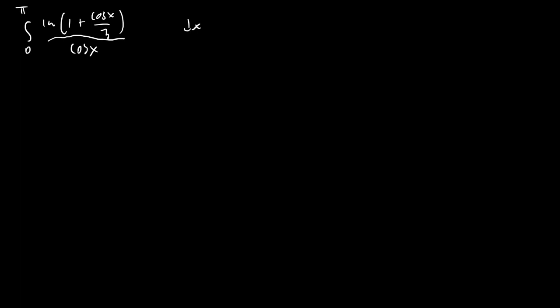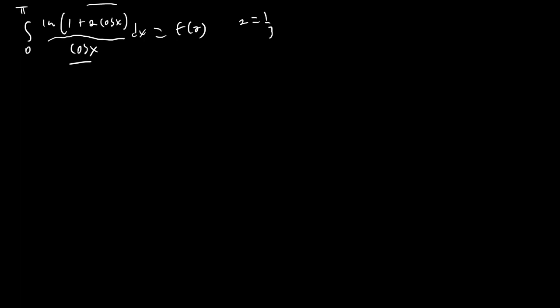We have ln(1 + cos x / 3) / cos(x), and I notice there's a cos(x) in the denominator and inside the logarithm. So I'm inclined to use Feynman integration — really the Leibniz rule — and introduce a parameter a, considering the integral from 0 to π of ln(1 + a·cos x) / cos(x) dx, evaluated at a = 1/3. We call this f(a), with f(a = 0) = 0.